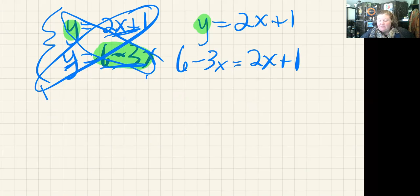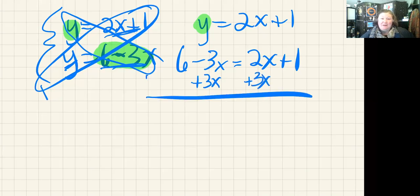When I have 6 - 3x = 2x + 1, I want to combine like terms. I'm going to first move the 3x to this side because it's the only negative, and I don't like negatives, so I'm going to get rid of it. That gives me 6 = 5x + 1.